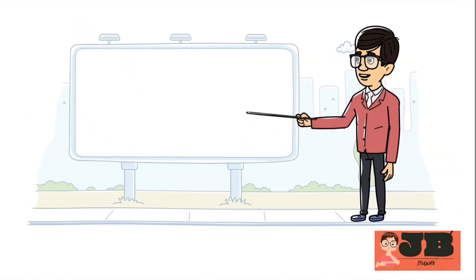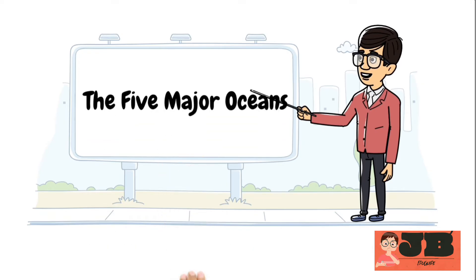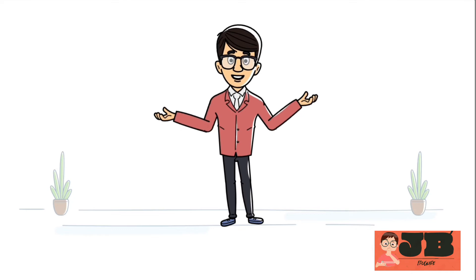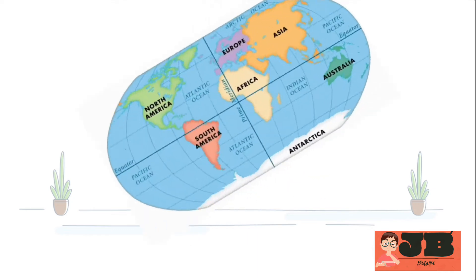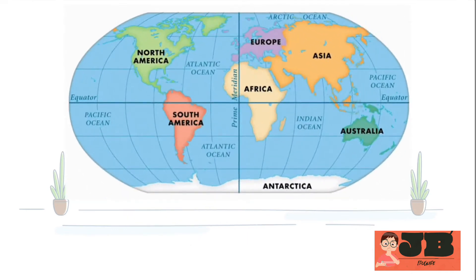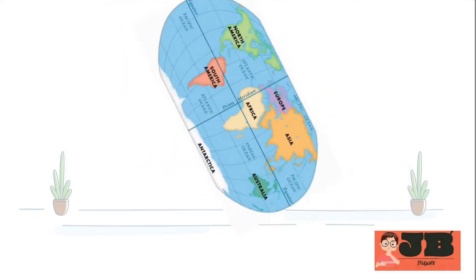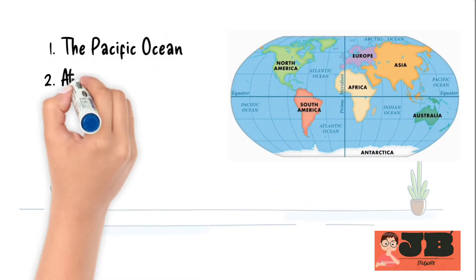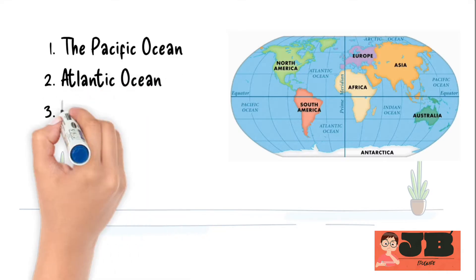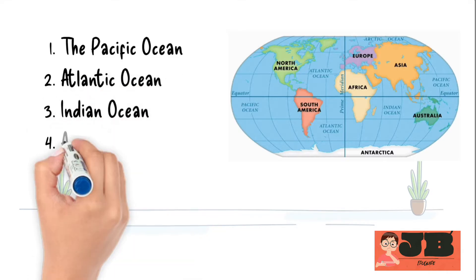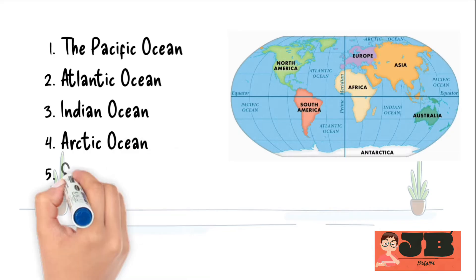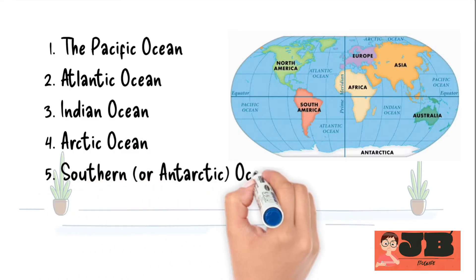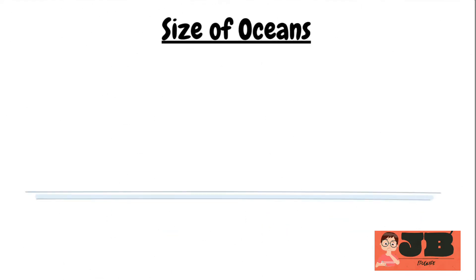Now let's go to the second subtopic: the five major oceans. On the world map, you can see five main oceans. Those are the Pacific Ocean, Atlantic Ocean, Indian Ocean, Arctic Ocean, and Southern Ocean. Let's understand about the size of oceans.